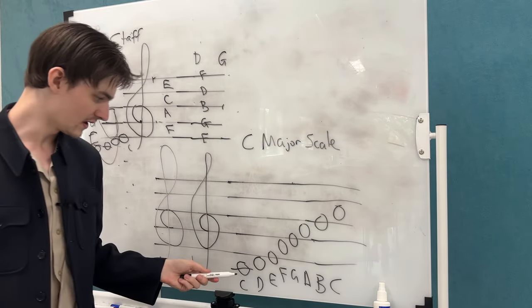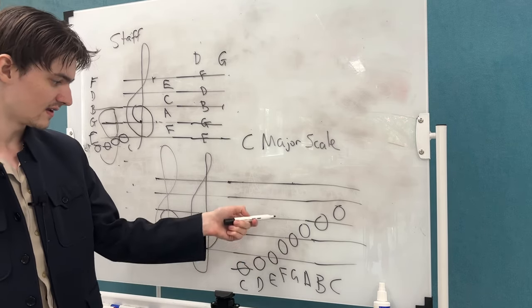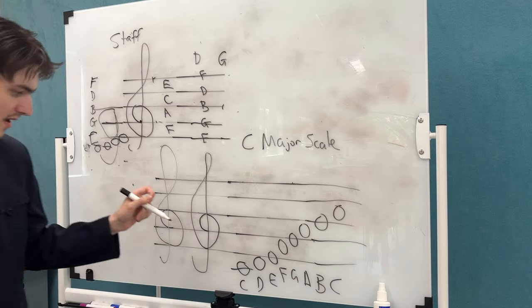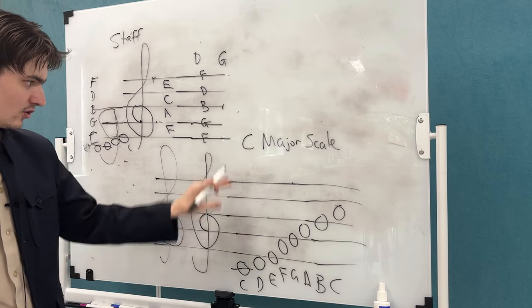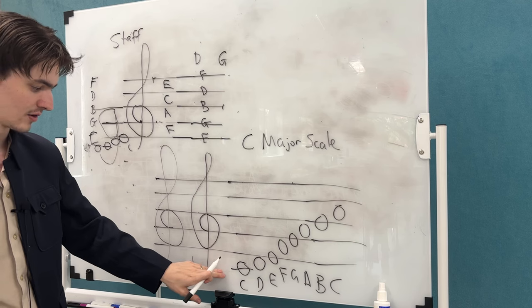A C major scale has eight notes in it. One octave C major scale goes C D E F G A B C. And when we're in C major, it's called C major because of these notes in it and the fact that it starts on a C.